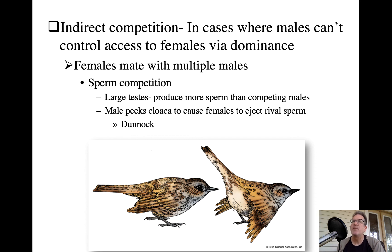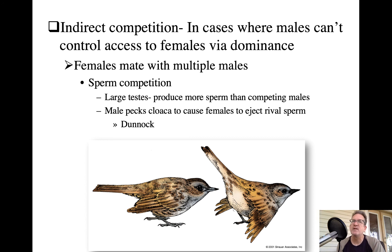The males themselves aren't fighting, but their sperm are competing. Another strategy is to remove competing sperm: the dunnock male, if he suspects his female has mated with another male, will peck her cloaca, causing her to eject rival sperm, and then mates with her again — reducing sperm competition and increasing the chance his sperm fertilize her eggs.